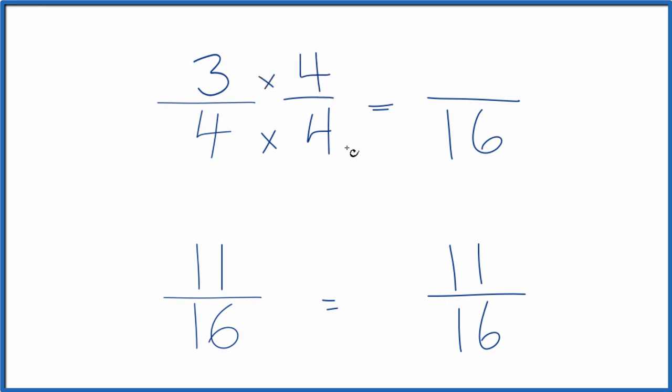We're just multiplying 3/4 by 1, so we don't change the value, just the way it's represented. 3 times 4 is 12, so 12/16—that's an equivalent fraction to 3/4.